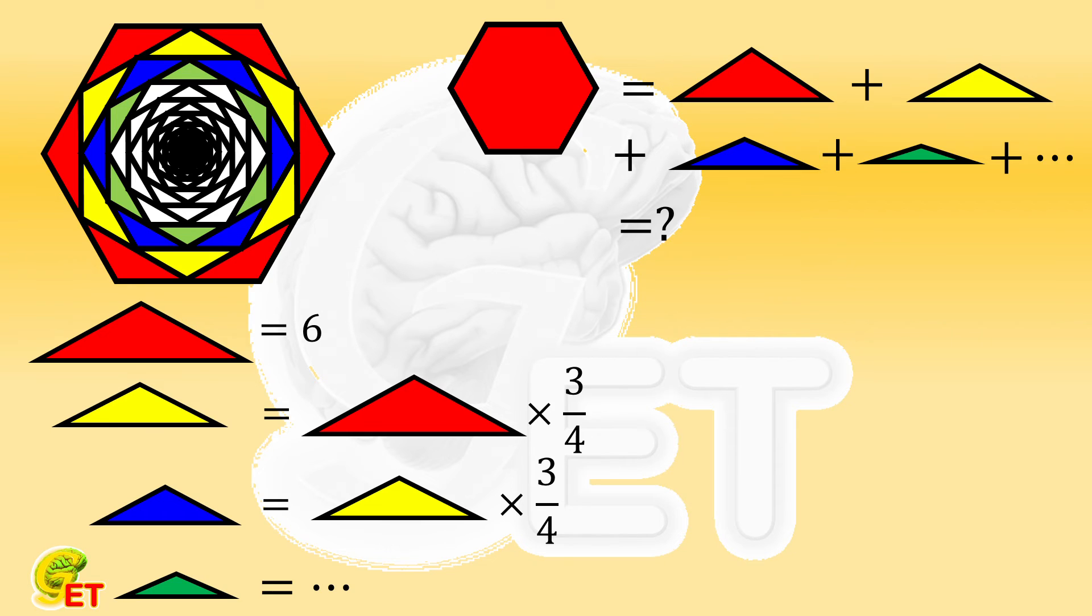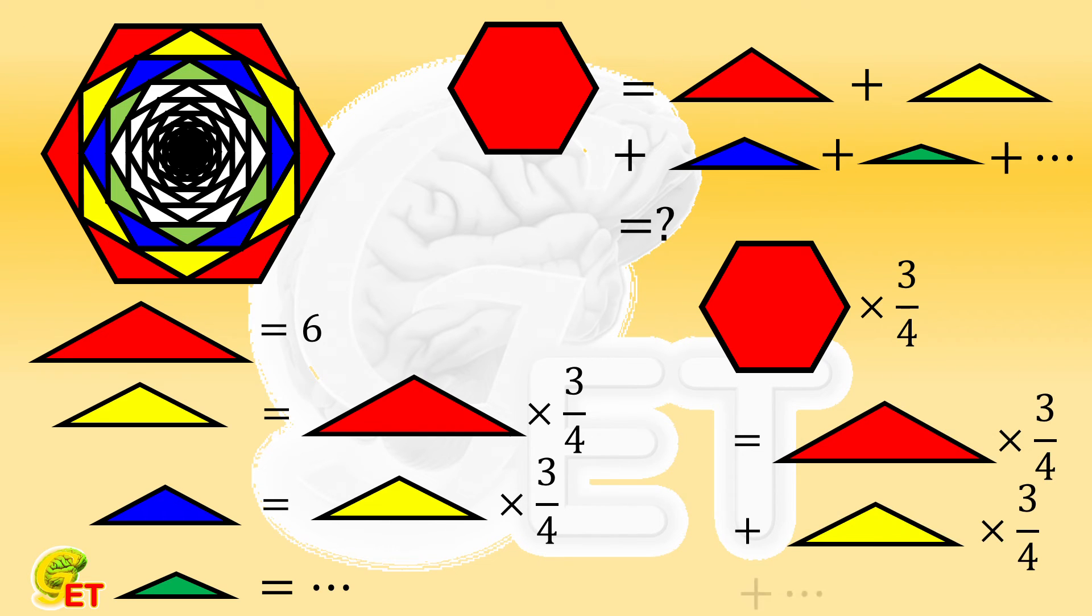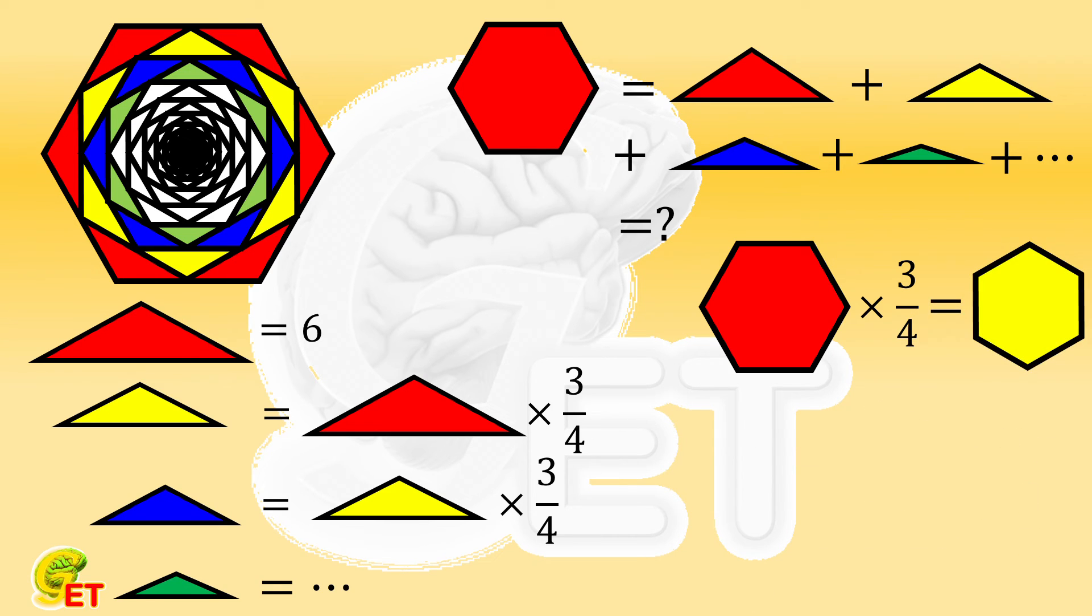We first multiply the desired area of the red regular hexagon by the common ratio, 3 over 4. It's the equivalent of multiplying each added triangle by 3 over 4. What is it equal to? It is equal to the area of the yellow regular hexagon. Therefore, we know that the difference between the areas of the red regular hexagon and the yellow regular hexagon is equal to 1 fourth of the area of the red regular hexagon.